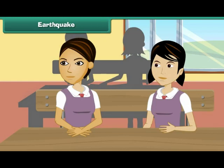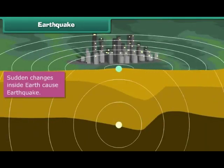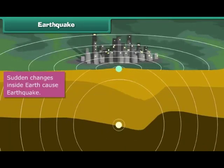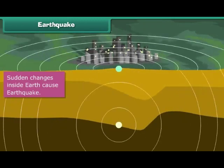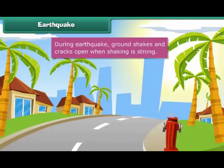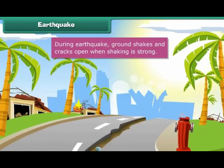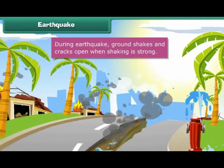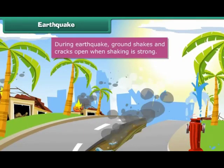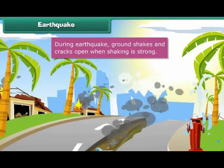How does an earthquake occur? When there is a sudden change deep inside the earth, it shakes the earth's crust, causing an earthquake. When an earthquake takes place, the ground shakes. When the shaking is severe, the ground cracks open in places.